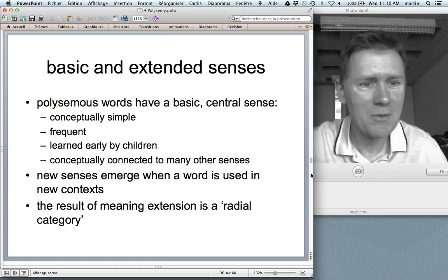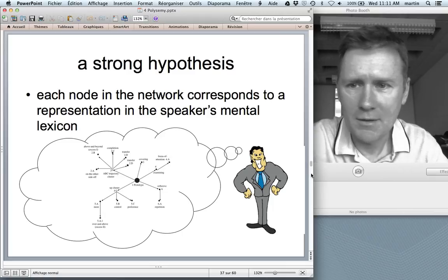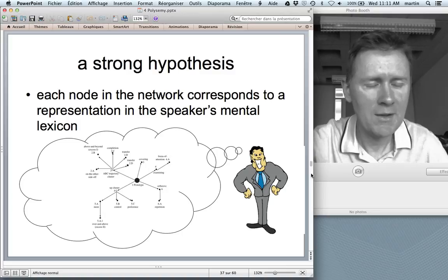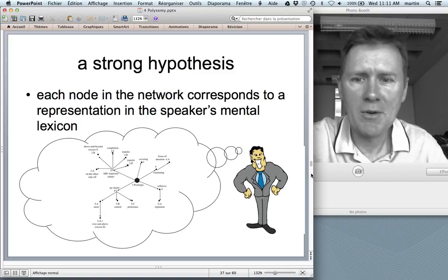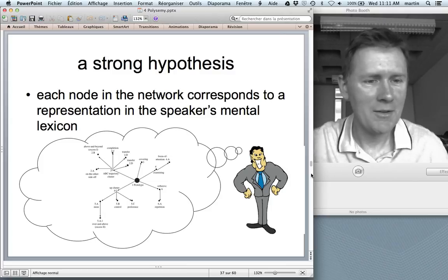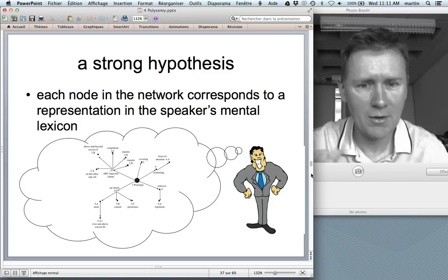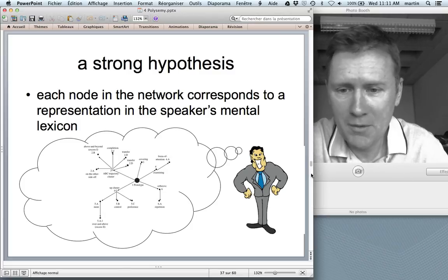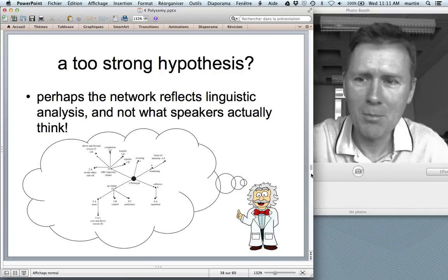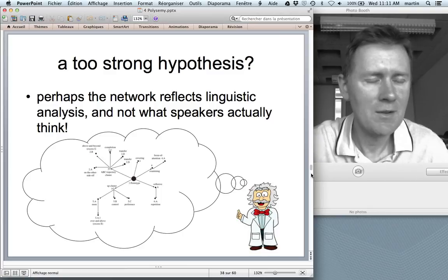All of this sounds very plausible and very interesting and somehow intuitive. But we should realize that it's also a very strong hypothesis. So what cognitive linguists try to do is really to model the semantic networks that people have in their minds, so that each node in the network corresponds to a representation in the speaker's mental lexicon. I have a mental lexicon in my mind. And in that mental lexicon, there is an entry over. And this entry has certain subentries and relations between subentries and so on and so forth. And that is what supposedly is shown in this network here.